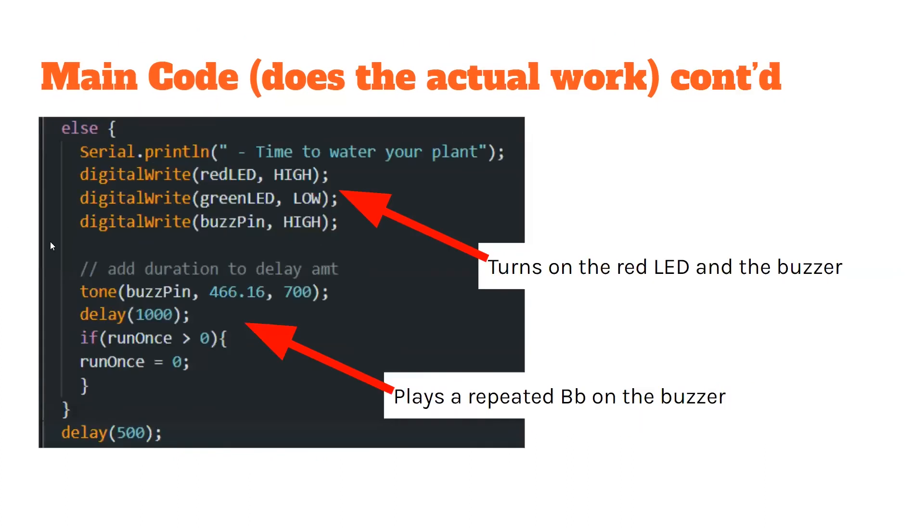If there isn't enough water in the plant, these lines of code tell the red LED to glow, and these lines tell the buzzer to buzz repeatedly.